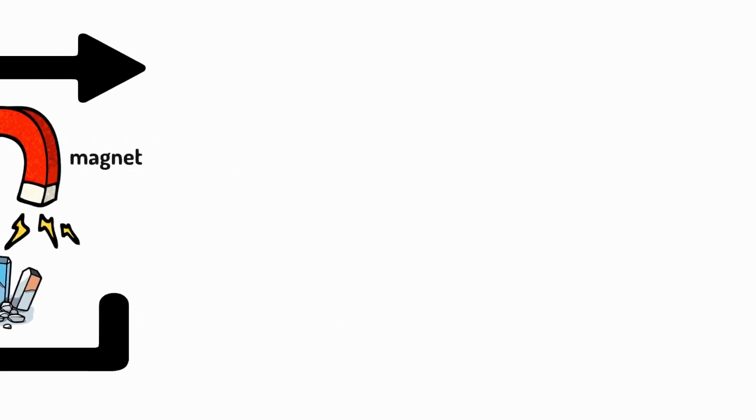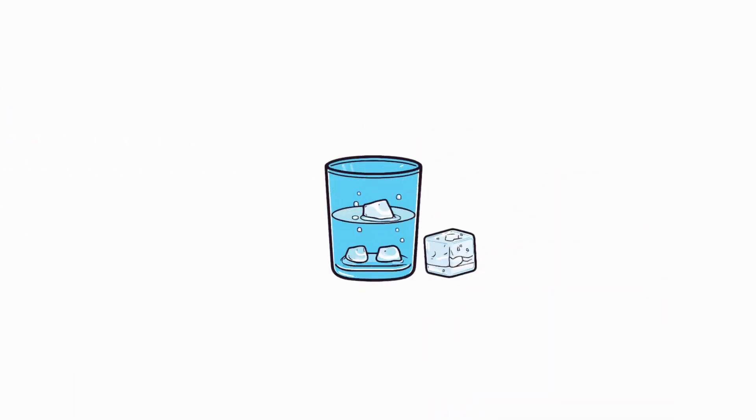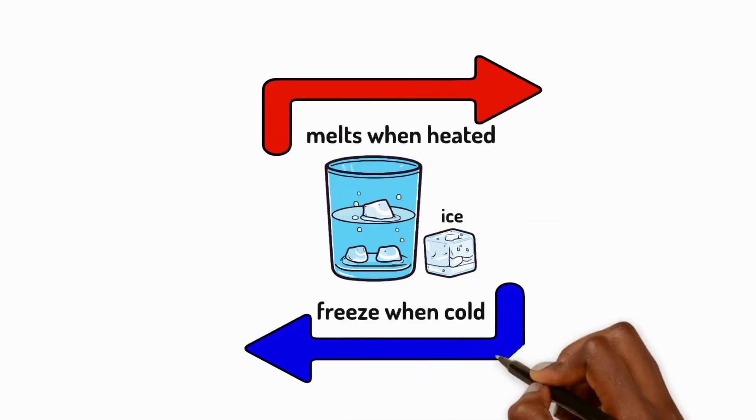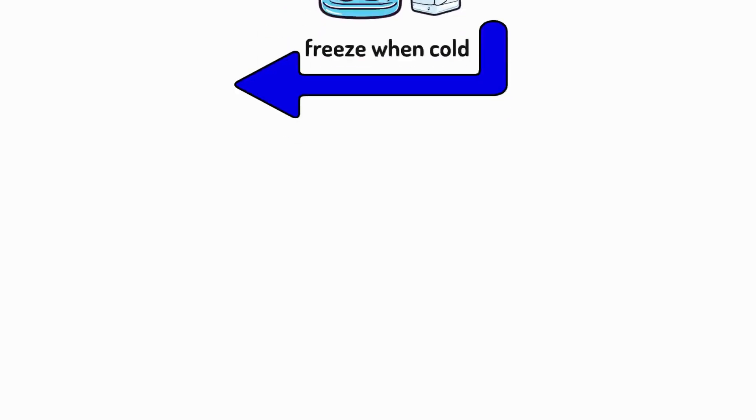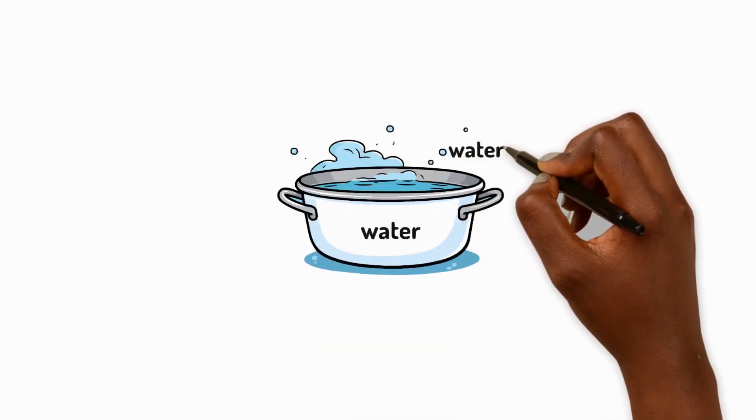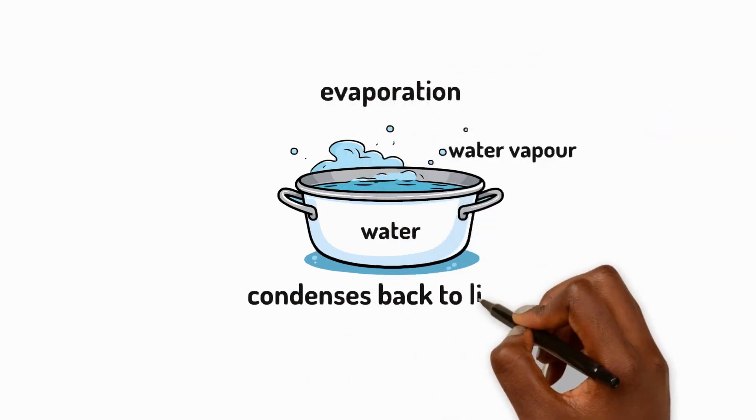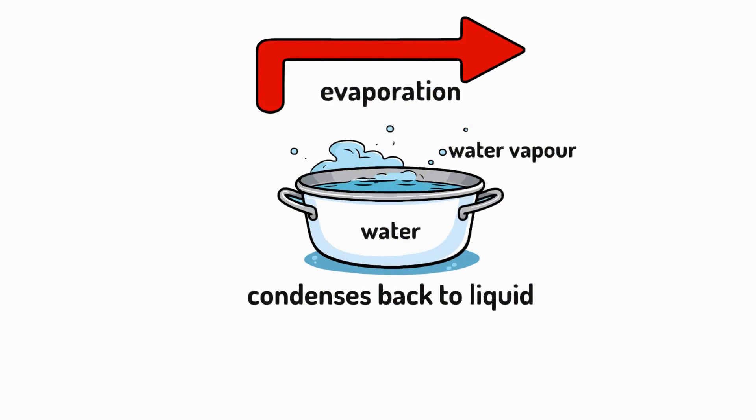Changes of state are also reversible. Ice melts into water when it's heated and water freezes back into ice when it's cooled. Similarly, water turns into water vapour when it's heated using evaporation and water vapour condenses back into liquid water when it's cooled. These are all reversible changes.